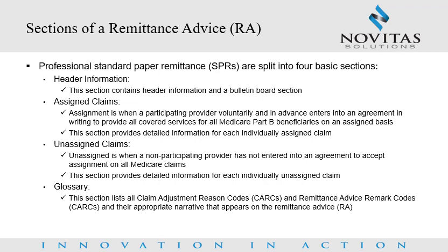Sections of a Remittance Advice. Professional Standard Paper Remittances are split into four basic sections. The first is header information, which contains header information and a bulletin board section. The second is assigned claims. Assignment is when a participating provider voluntarily and in advance enters into an agreement in writing to provide all covered services for all Medicare Part B beneficiaries on an assigned basis. This section provides detailed information for each individually assigned claim.